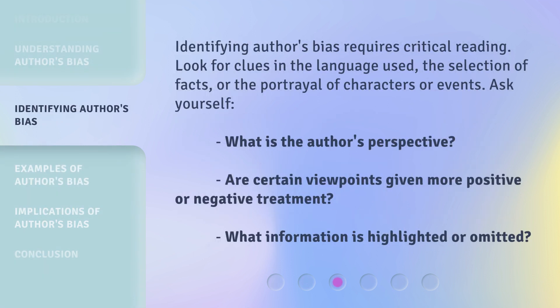Identifying author's bias requires critical reading. Look for clues in the language used, the selection of facts, or the portrayal of characters or events. Ask yourself: what is the author's perspective? Are certain viewpoints given more positive or negative treatment? What information is highlighted or omitted?